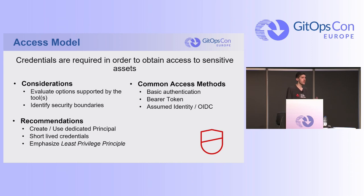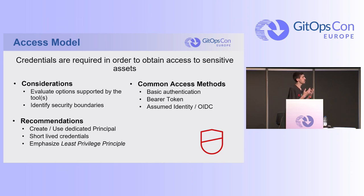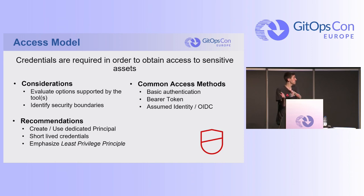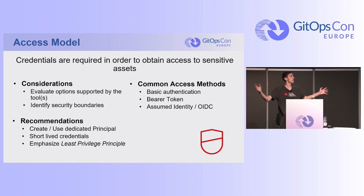We need to access the credentials. What are some considerations when setting up how you're accessing those values? One, understand what options and capabilities are provided by the tools you're actually using. Two, identify security boundaries — ensure you only create credentials and access models for your application only. Don't create a single principal that's going to be used for all your applications across your entire portfolio. That's just a breach waiting to happen.